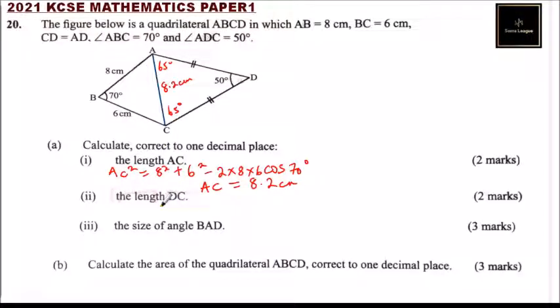Part ii, the length DC. Because it is an isosceles triangle, we can draw a line which bisects AC, and once you do that, it means this is 4.1 and this is 4.1. Therefore, this angle now we get is 25 and this is 25, because this is a perpendicular. This line bisects the angle into 2. So we can now use a formula.